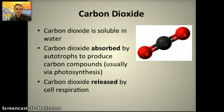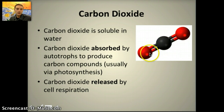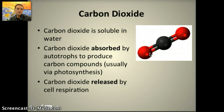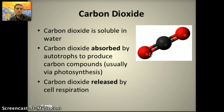Carbon dioxide is soluble in water, meaning it can dissolve in water, and it is absorbed by autotrophs to produce carbon compounds, usually through photosynthesis. It's made of a carbon atom and two oxygen atoms, electronically balanced through sharing of electrons. Carbon dioxide is also released by cellular respiration — when an organism performs cellular respiration, it releases CO2 out into the atmosphere. Carbon dioxide can remain as a dissolved gas, or it can form carbonic acid in water, which can disassociate to form hydrogen and hydrogen carbonate ions, causing a decrease in pH. Changes in pH for marine organisms could be a major problem moving forward.